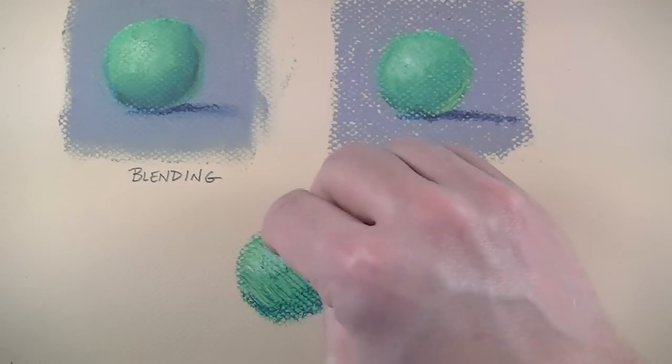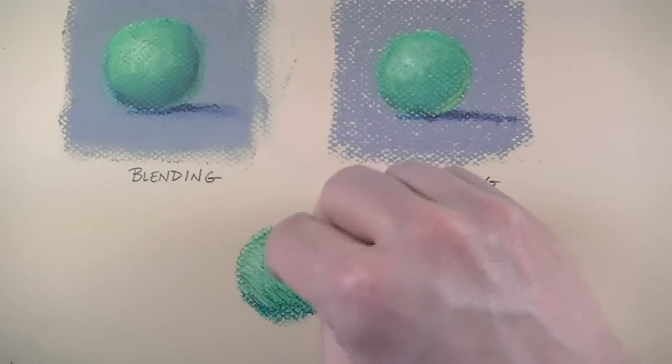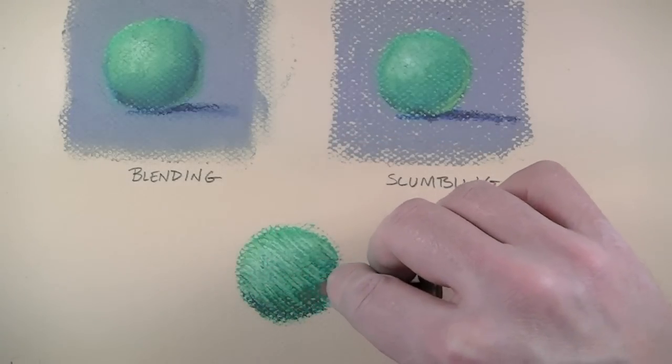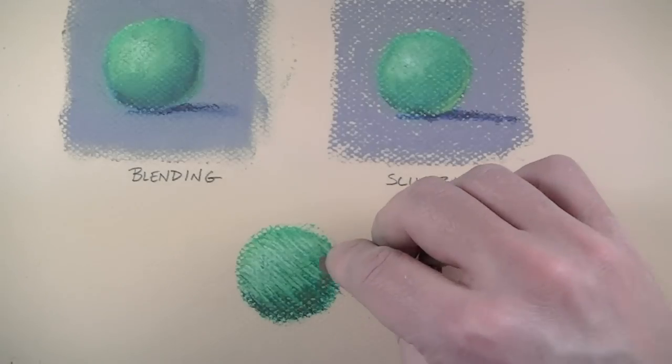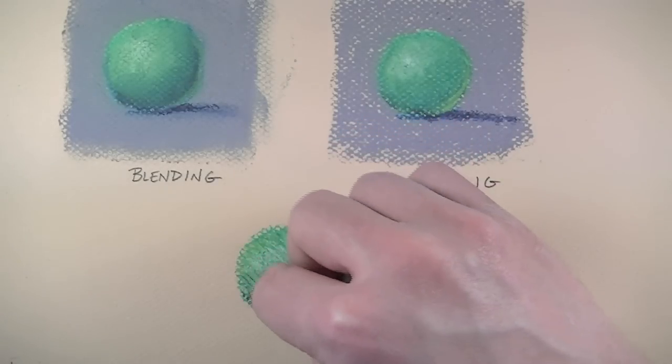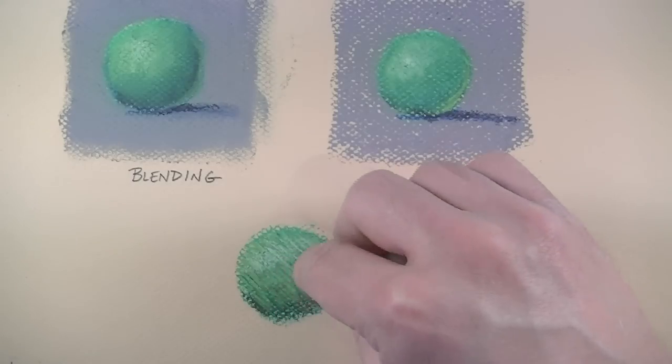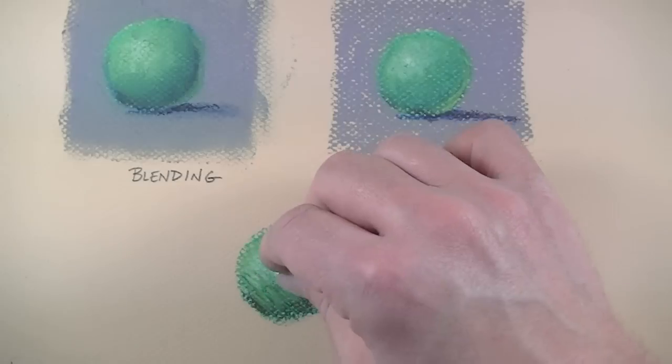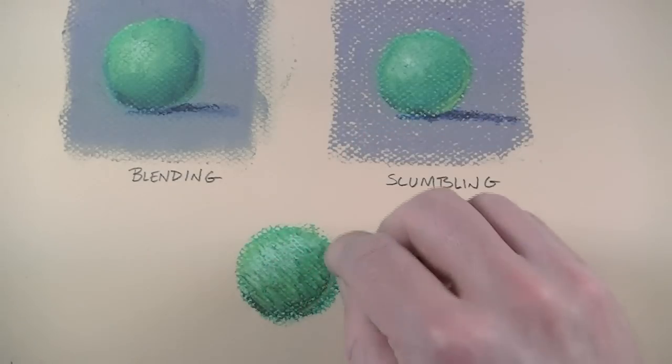To create the feathering effect I am simply creating lines instead of solid areas of color or value. In this case I'm using the same colors as I used in the previous two examples with the exception of a dark brown instead of a dark gray in the shadowed area. Each layer that I put on increases the depth of color and makes the sphere feel more like a form.